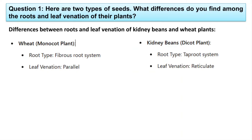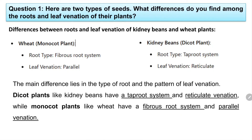In the case of kidney beans, if the seed is a dicot plant — we can divide the kidney beans into two parts — then the root system is always tap root and the leaf venation is always reticulate venation. So the main difference lies in the type of roots and the pattern of leaf venation. Dicot plants like kidney beans have a tap root system and reticulate venation, while monocot plants like wheat have fibrous root system and parallel venation.